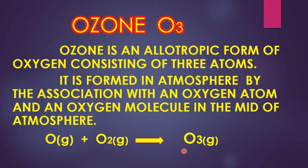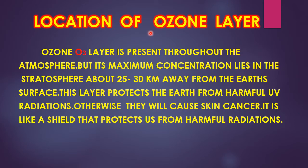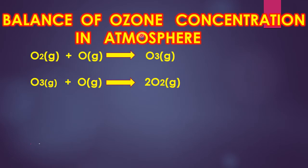Most of the ozone accumulates in the layer of stratosphere. The ozone layer is present throughout the atmosphere, but its maximum concentration lies in the stratosphere about 25 to 30 km away from the Earth's surface. This layer of ozone protects the Earth from harmful ultraviolet (UV) radiations, which would otherwise cause skin cancer. It acts like a shield that protects us from harmful radiations.